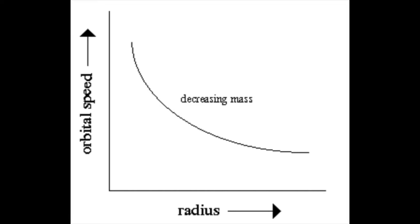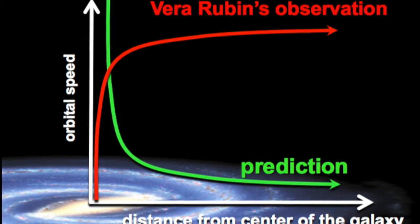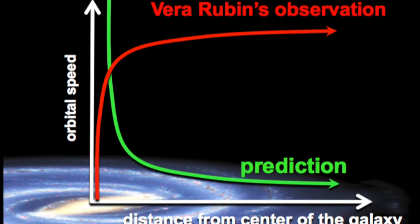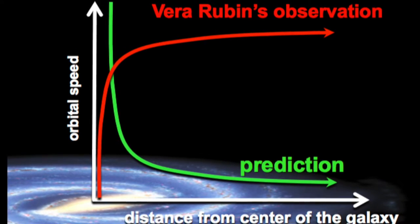Now here comes Vera Rubin. She said, why not? Let's measure it. And she observed galaxies to see if they followed the same rules. But what she found was much different than what was expected. It seems as if the galaxies with the widest orbits move much faster than those with smaller orbits around the bulge.